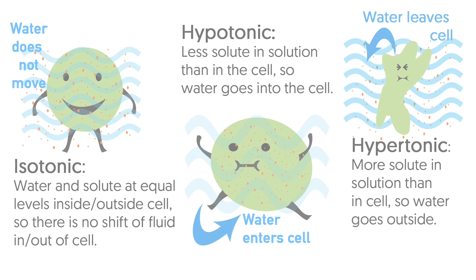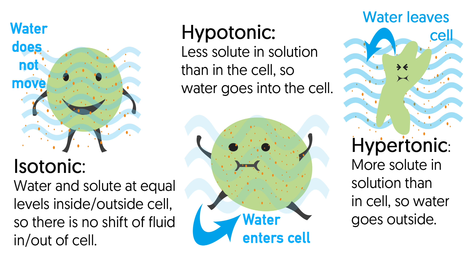Let's look at a quick review of the three types of crystalloid IV solutions. Isotonic is when water and solute are at equal levels inside and outside of the cell — there is no shift of fluid in or out of the cell. Hypotonic solutions are when there is less solute in the solution and more solute in the cell, so water goes inside the cell. Hypertonic solutions are when more solute is in the solution and less solute in the cell, so water goes outside of the cell. Thank you for watching this video on IV solutions.